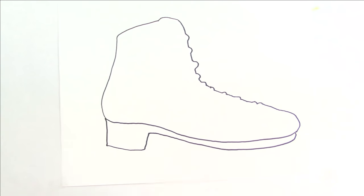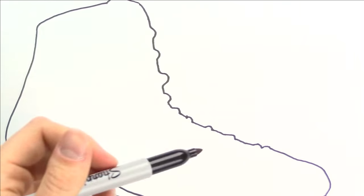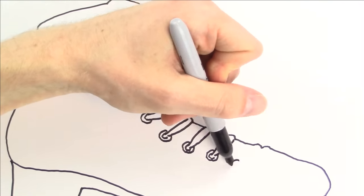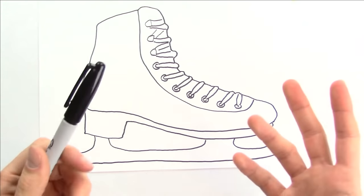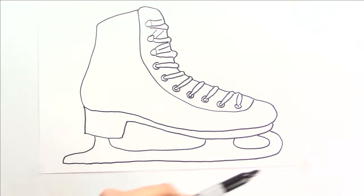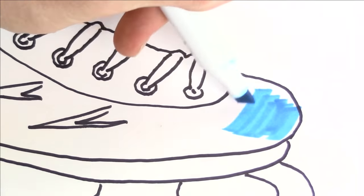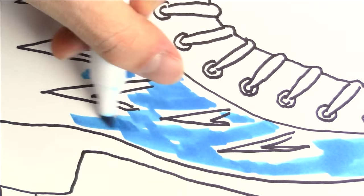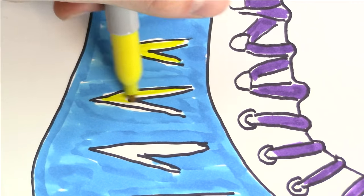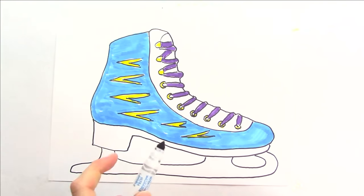And now the ice skate blade. And now the shoelaces. Now he wants some type of pattern on the side of the skate, so I'm going to do these quick dash marks. And he wanted the skate to be mostly blue. And I'm going to use a little bit of yellow. And of course I need to color in the blade gray.